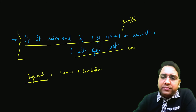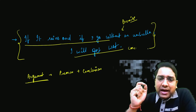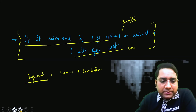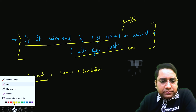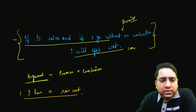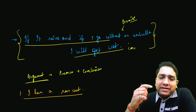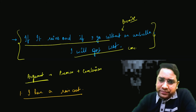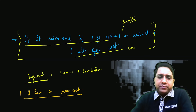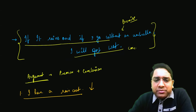Premise is just a background statement. For example: 'I am feeling hungry' is a premise; 'I am going to cook Maggi' is the conclusion. So the argument is: I'm feeling hungry, therefore I'm going to cook Maggi. In CR questions, the terms argument, premise, conclusion, weakening, and strengthening are simple and familiar concepts — don't overthink them.